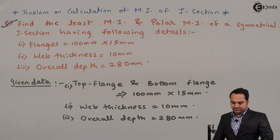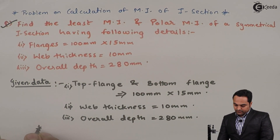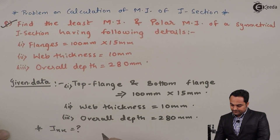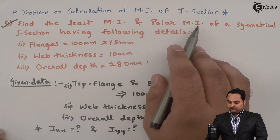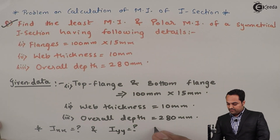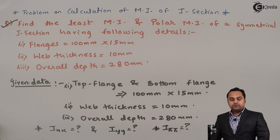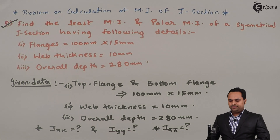With this data available, the question is to find the least MI. We have to calculate out of the moment of inertia about Ixx and Iyy which one is the least value. Next, we have to find polar MI, which is the moment of inertia about the third axis.